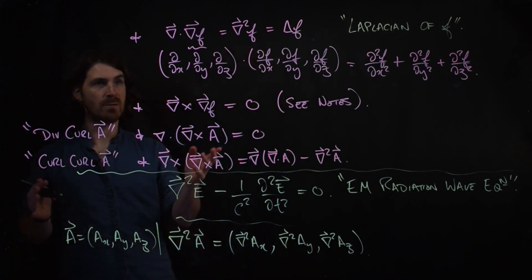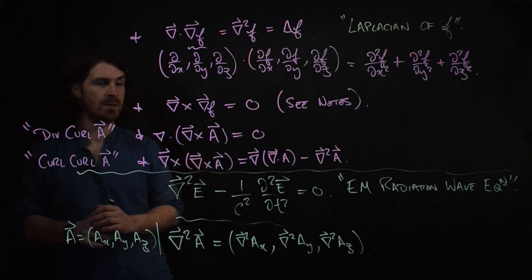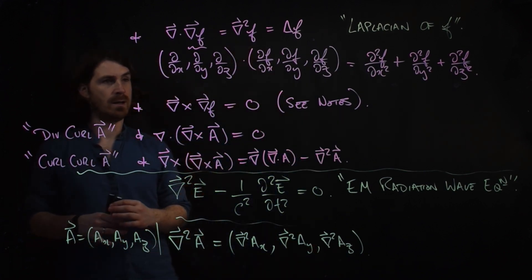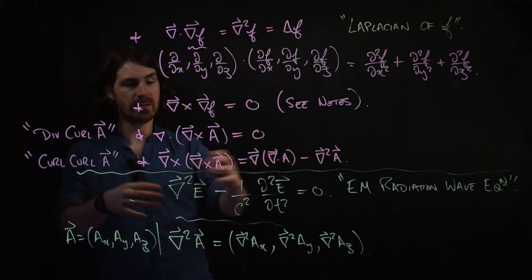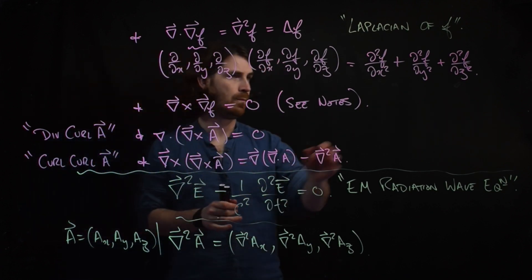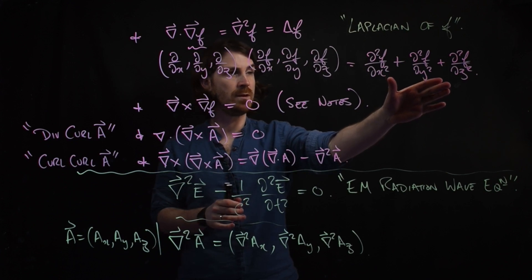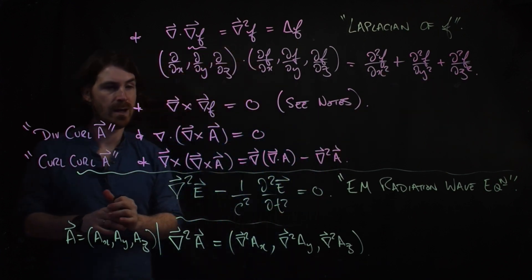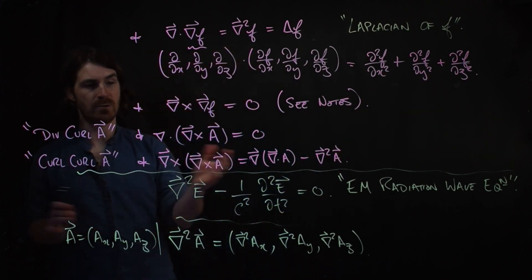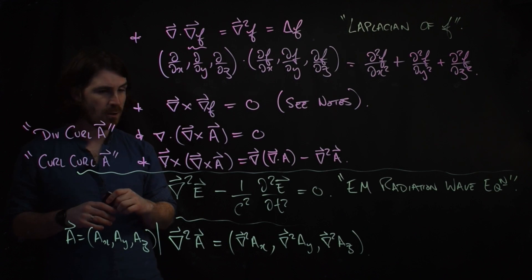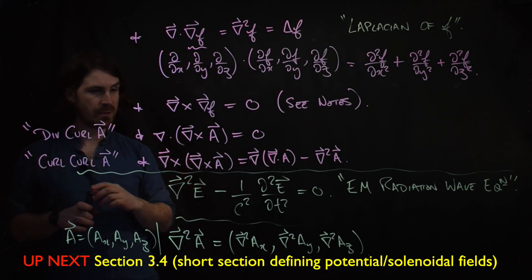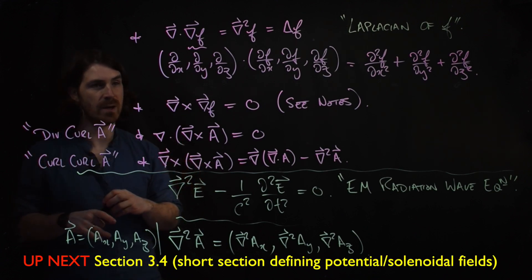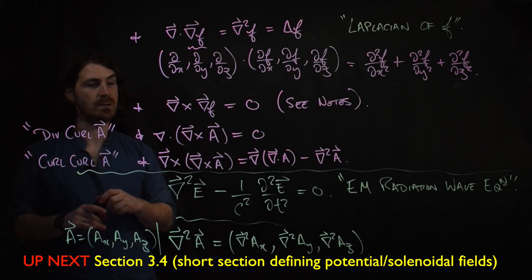So that covers some of the higher order derivatives. In practice it's easy to calculate these things — it just involves partial derivatives and vector cross products. We're nearly finished section three; we just have to define potential and solenoidal vector fields.